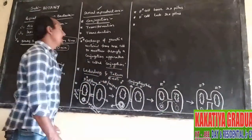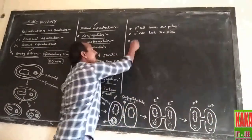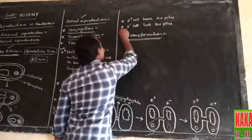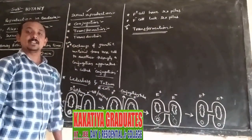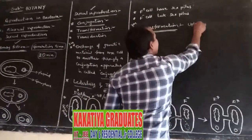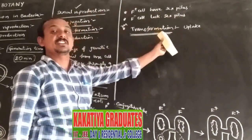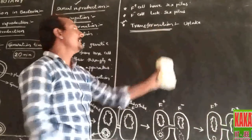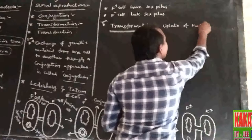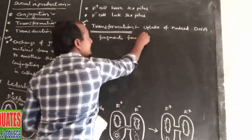The second method is transformation. Transformation means the uptake of naked DNA fragments from the surrounding environment, which were previously released, and the expression of that genetic information in the recipient cell is called transformation.